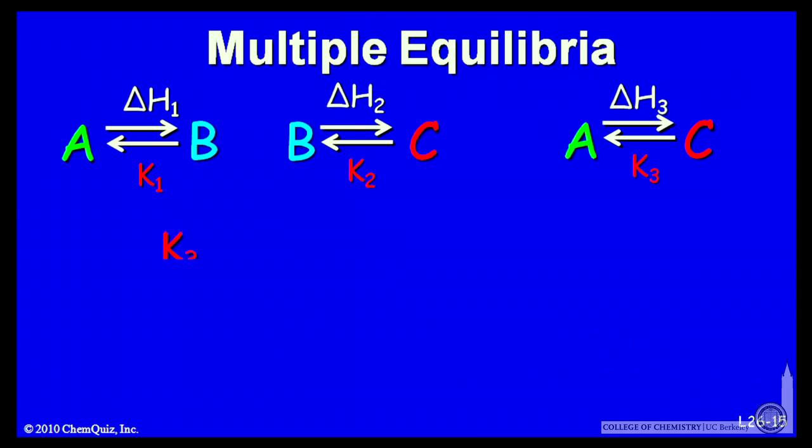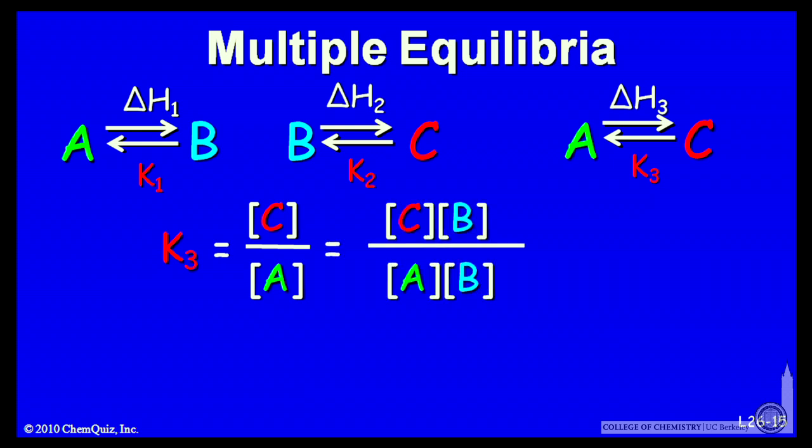How are the K's related? The equilibrium constant K3 is concentration of C over A, products over reactants. If you write that as C over A with the B concentration over B, I haven't changed anything. This is multiplying and dividing by B.